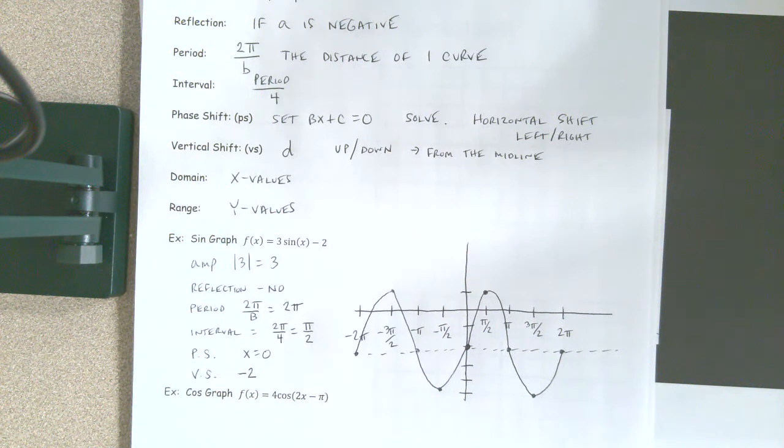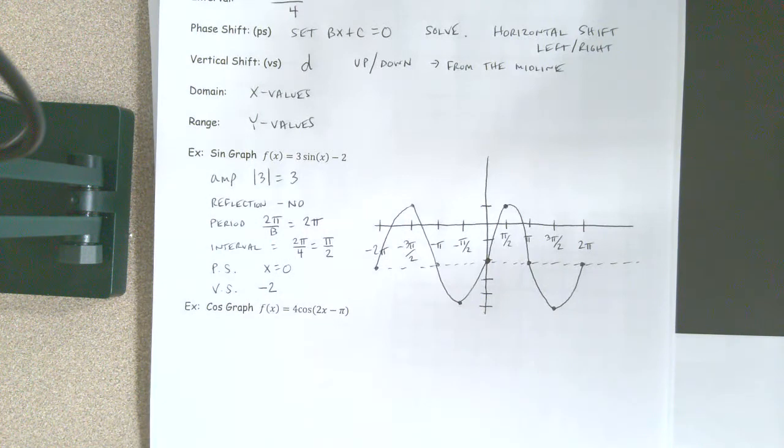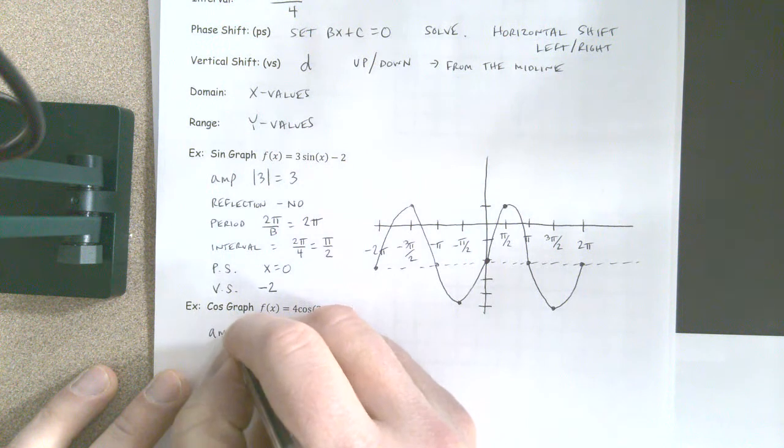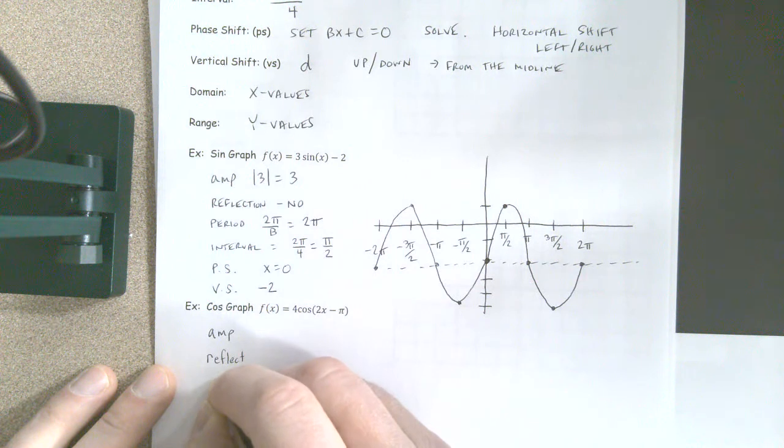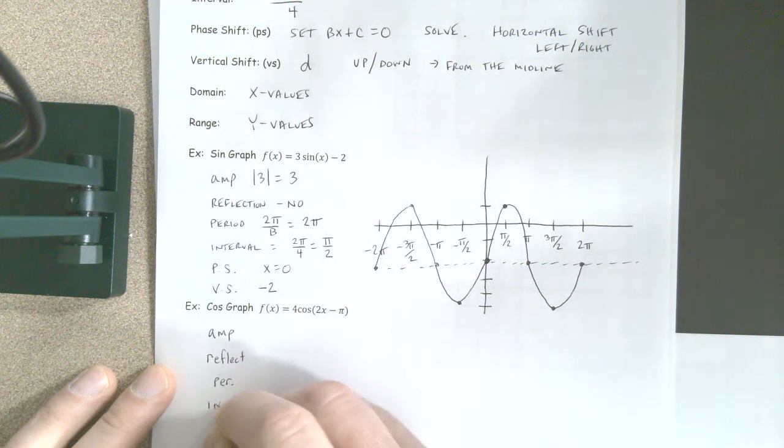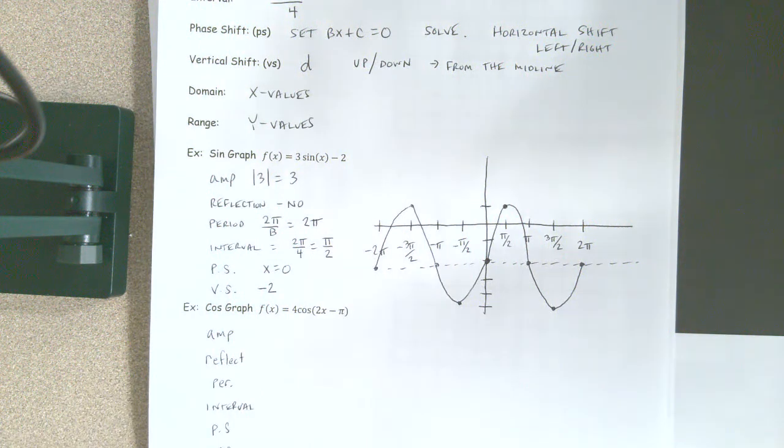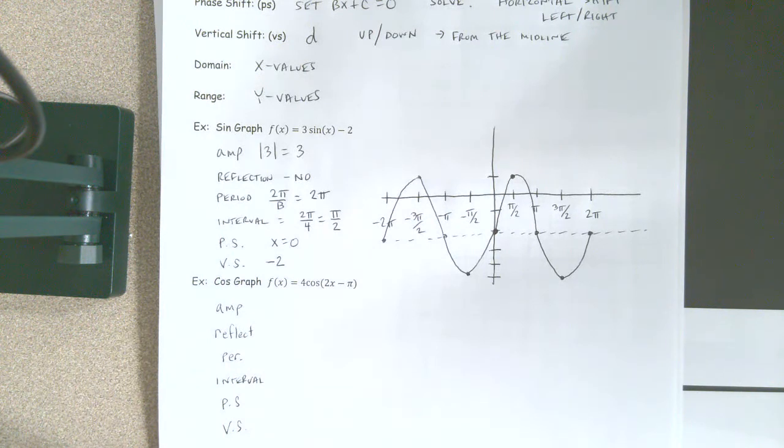Now, I want you to go ahead and on your own find the amplitude, find the reflection, period, interval, phase shift, and vertical shift for this second example. Go ahead and find those things right now on your own, and then we'll come back together here in just a minute and check to see how you're doing with that.